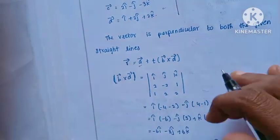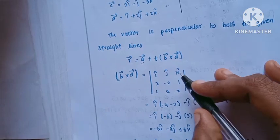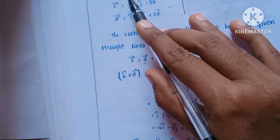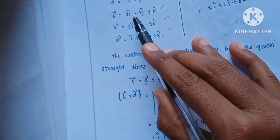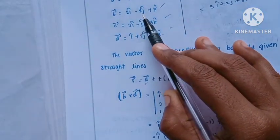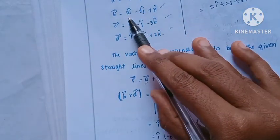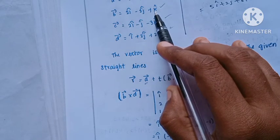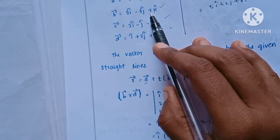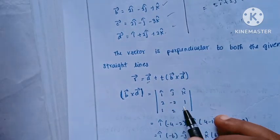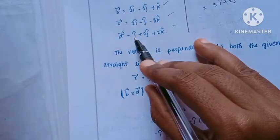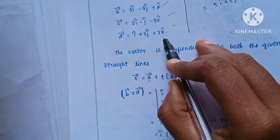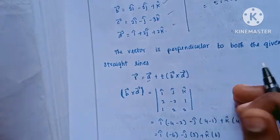We set up the cross product using the i, j, k determinant. For b-vector: i-coefficient 2, j-coefficient minus 2, k-coefficient 1. For d-vector: i-coefficient 1, j-coefficient 2, k-coefficient 2. Now substitute into the determinant.